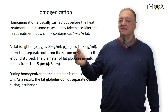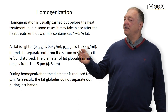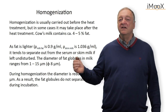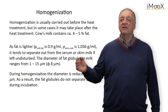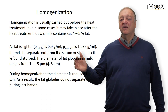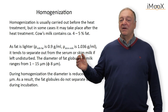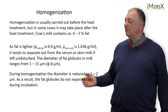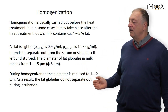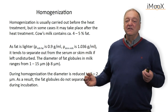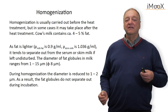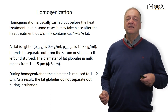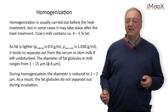The homogenization is shown here. In the milk we have a very heterogeneous particle size ranging from 1 micrometer to 15 micrometers, with an average of about 8 micrometers. After homogenization, the size is reduced to about 1 to 2 micrometers, and what is very important is that when the particle size is reduced, they do not flotate anymore and they do not separate from the liquid.